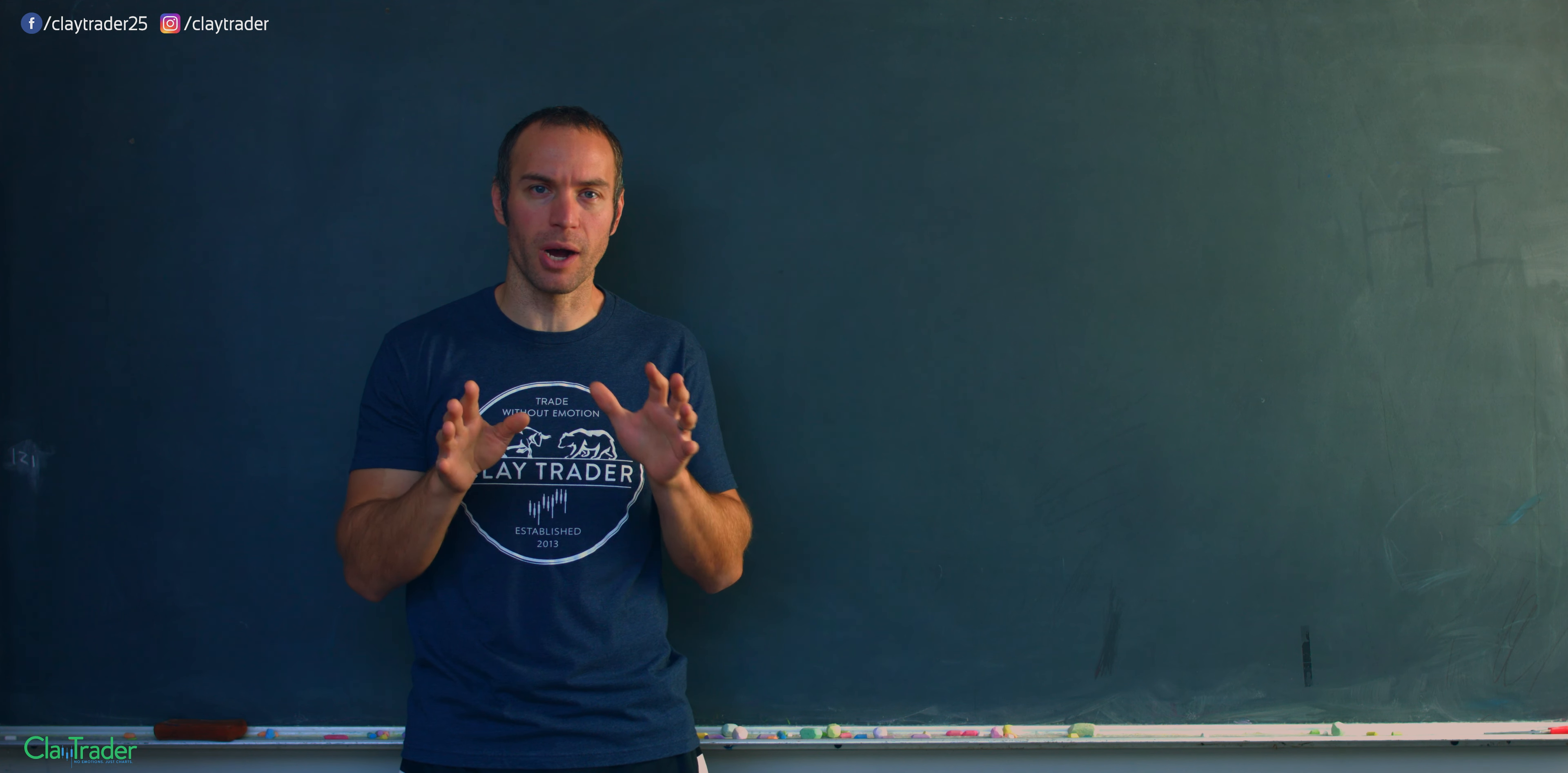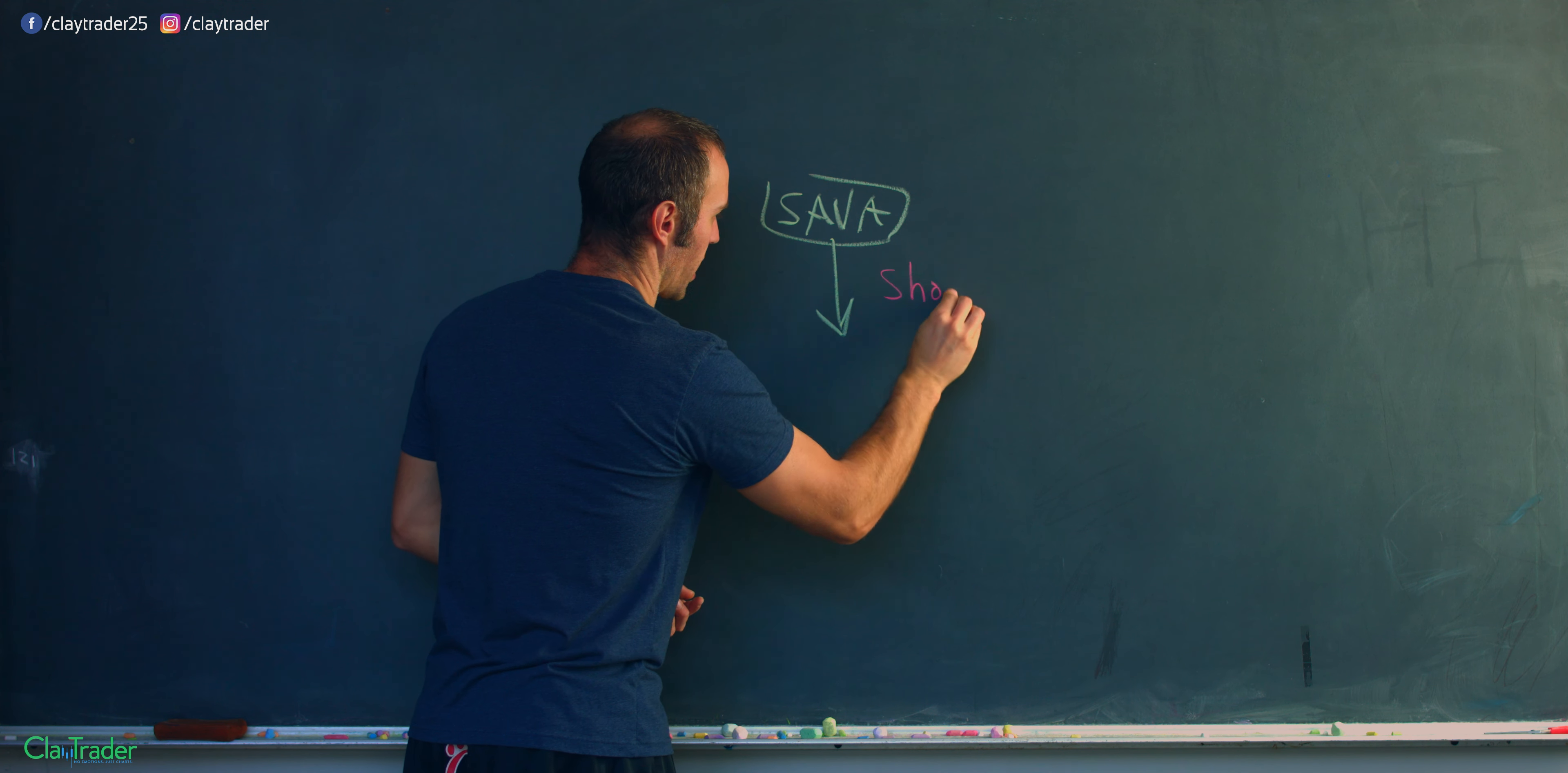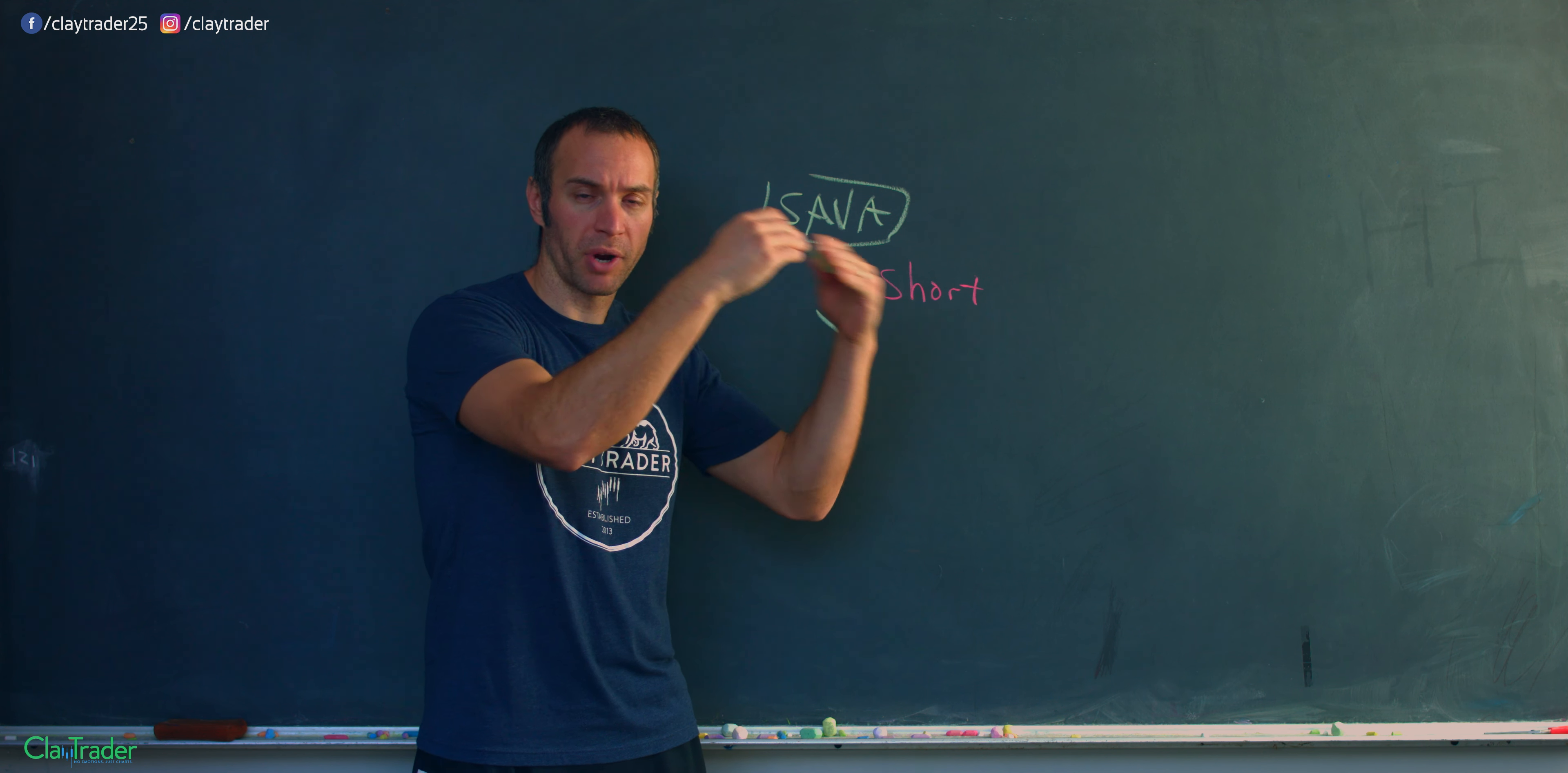To set up the context of this trade, I was trading stock SAVA and I wanted it to go down. In other words, I was looking to short the stock. Very quickly, if you're a beginner, shorting or going short means that you can make money when prices go down. Super crazy, I get it when you first hear it, but yes, you can make money if a price goes down.